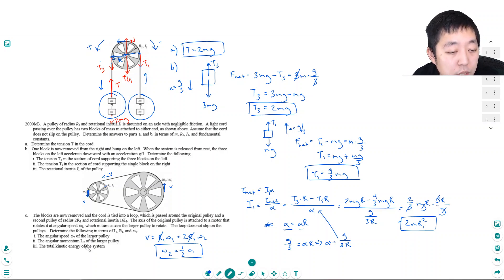The angular momentum of the larger pulley. Angular momentum is given by the equation L equals I omega. Well, we know what his I is. It's 16I1. And his omega is omega 2, and that's 1 half omega 1. That's equal to 8I1 omega 1.